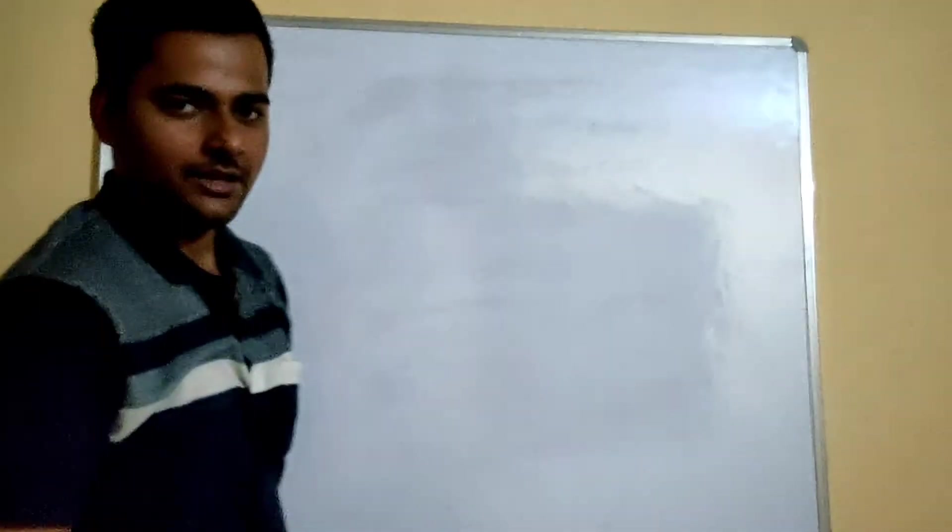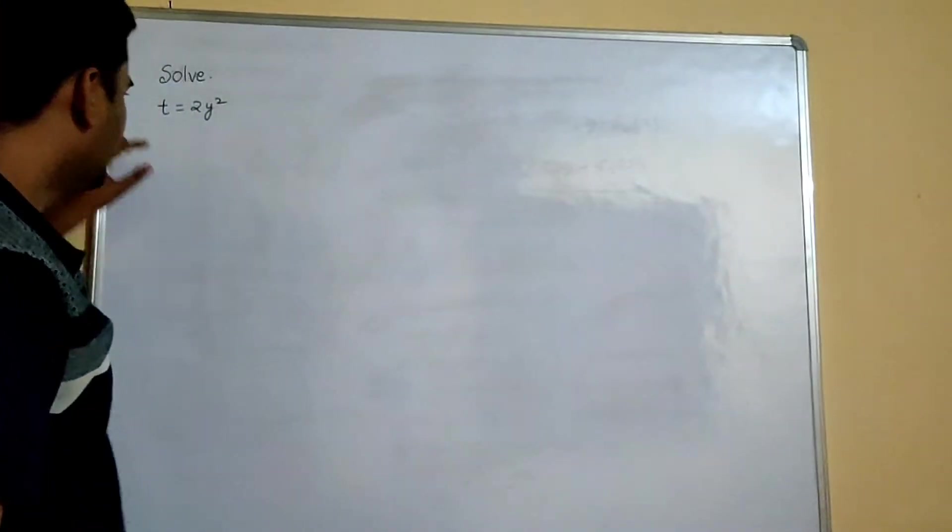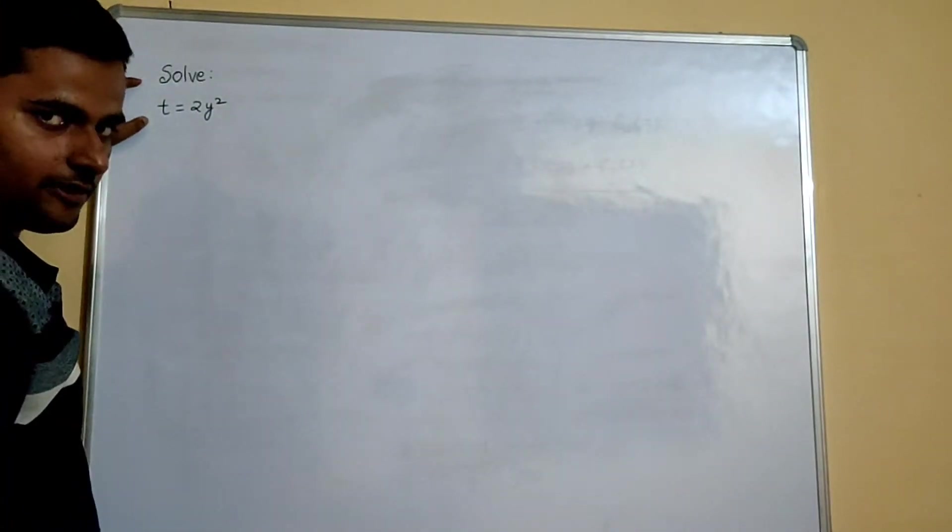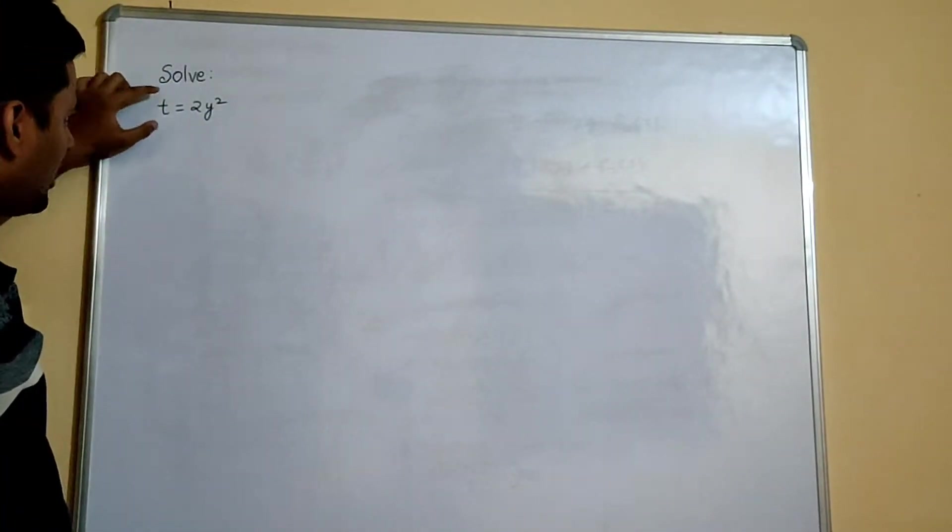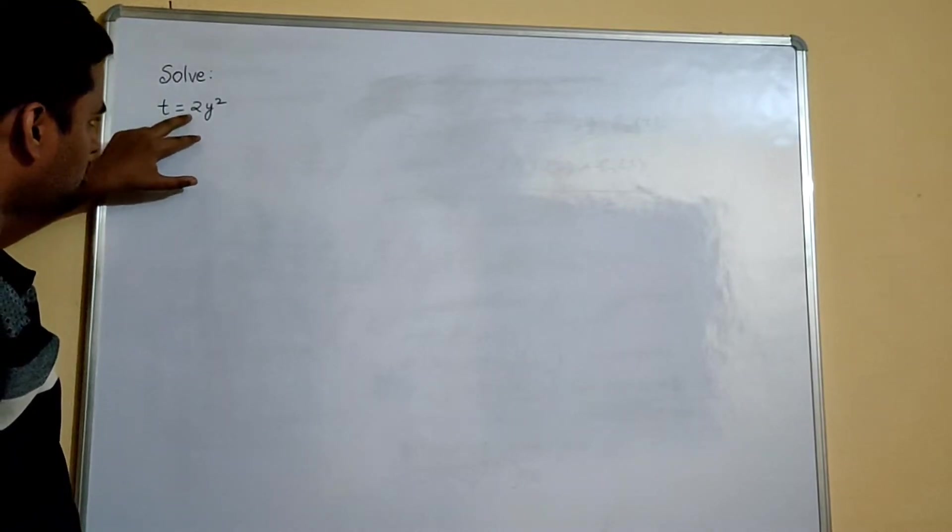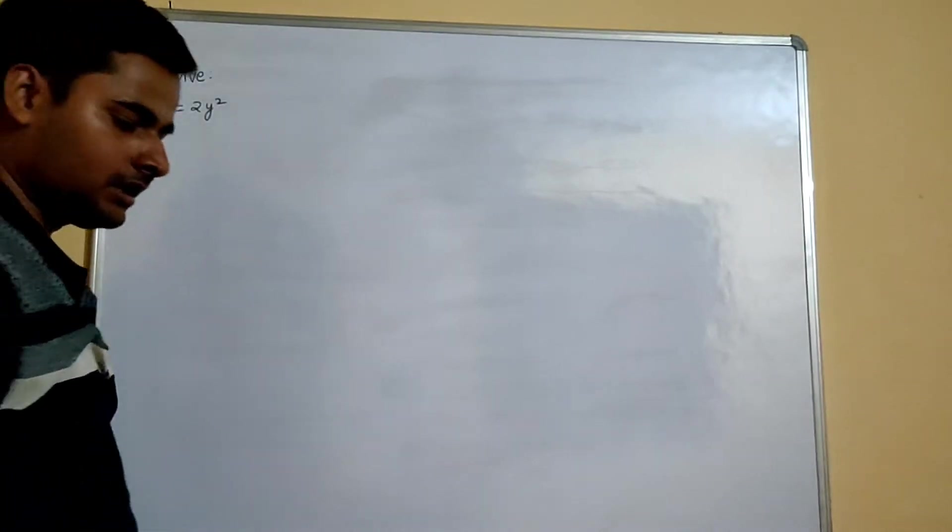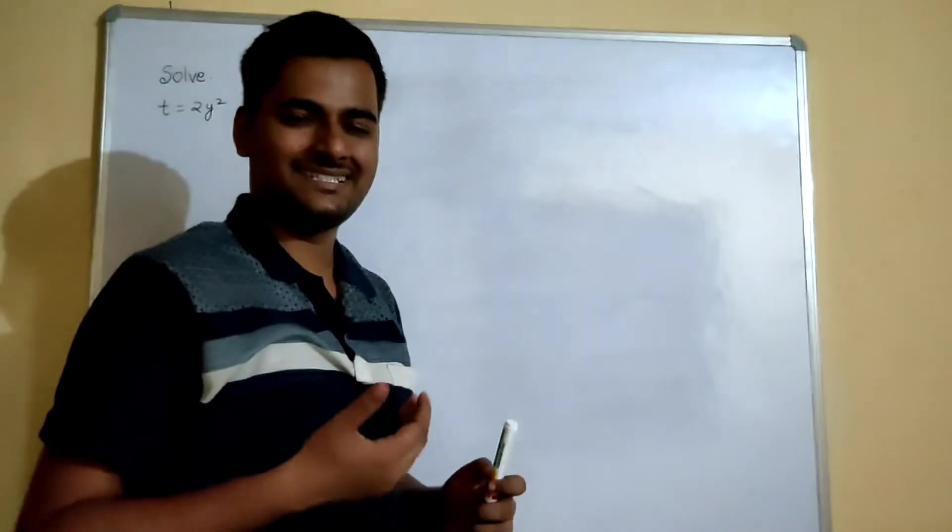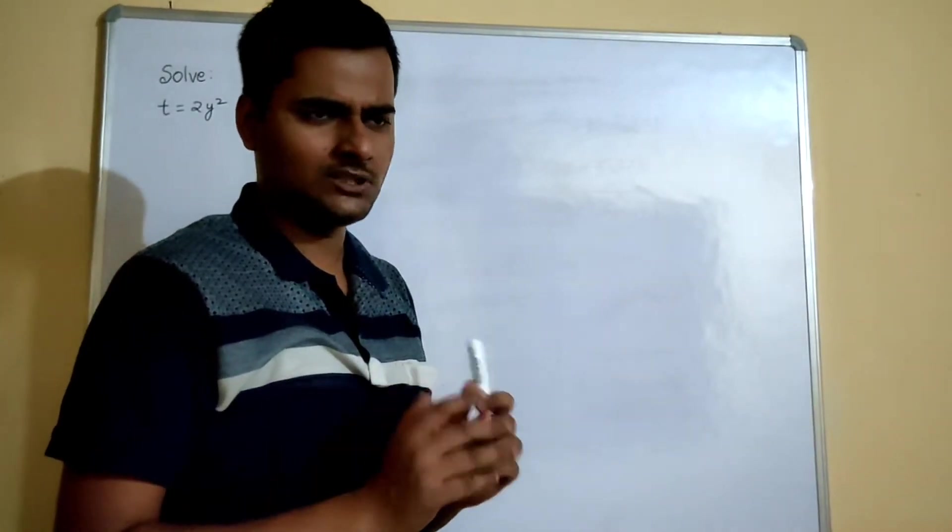Namaskar. Today we are going to solve this question from PD. So we have to solve T equals to 2y square. So you must be thinking what is T here. You are known to 2y square, y is the variable.